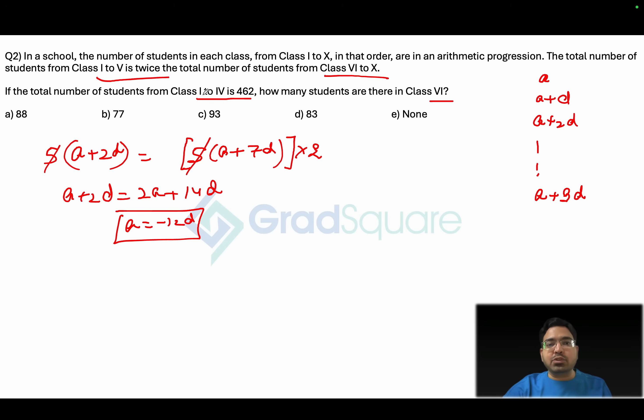If the total number of students from class 1 to class 4, now class 1 to class 4 will be a plus 3d. You can add all of this or you can look at the middle term which is a plus 1.5d. That would turn out to be the middle term and that can be multiplied by 4, but if you don't want to do this then we can simply add all of these four numbers and write it as 4a plus 6d.